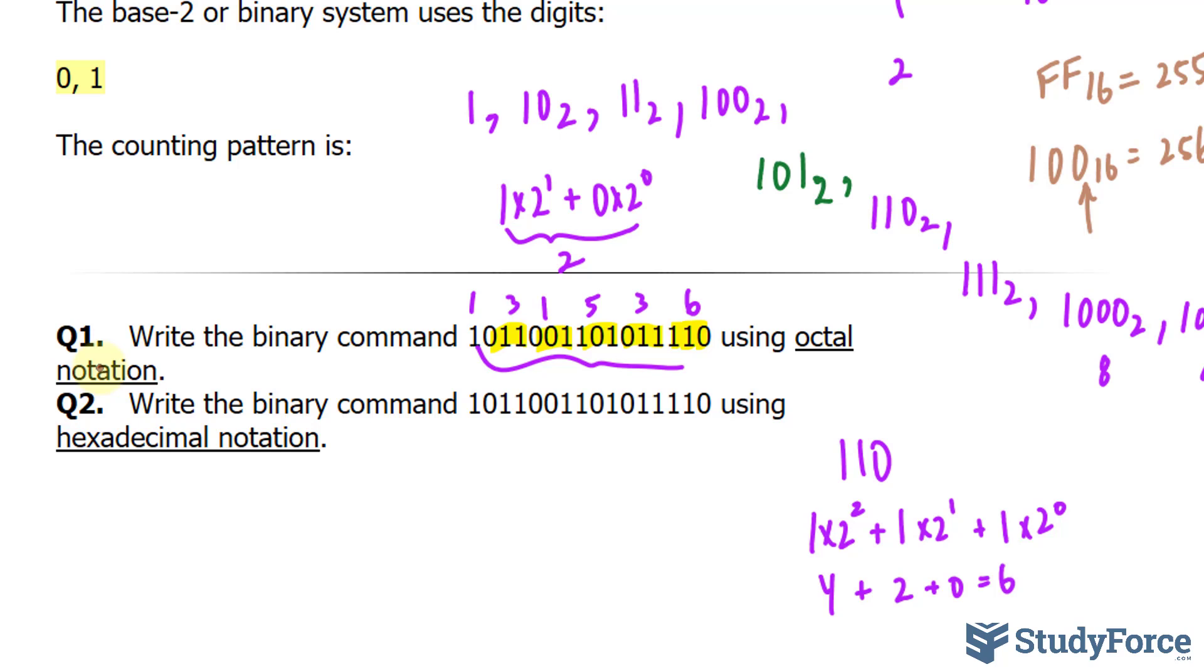In question number 2, we have to convert the same binary command using hexadecimal notation. For this, it's nice to break it down into groups of 4. When we have 4 groups of 4, we will convert 1, 1, 1, 0 into decimal, and then from there, change what we have to change.